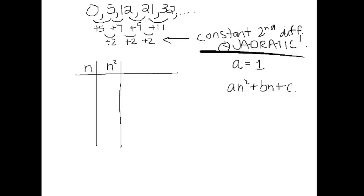We have the sequence 0, 5, 12, 21, 32 — five numbers. We'll call the first term n equals 1, then n equals 2, 3, 4, 5. If I try n squared as the entire formula: plugging in 1 gives 1, plugging in 2 gives 4, plugging in 3 gives 9, and plugging in 4 gives 16. So we're comparing those to the actual numbers: 1 versus 0, 4 versus 5, 9 versus 12, and 16 versus 21.